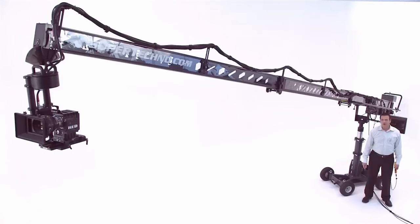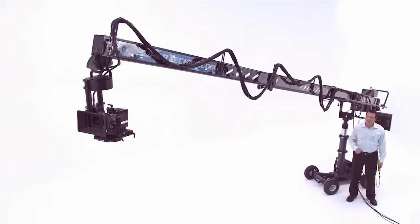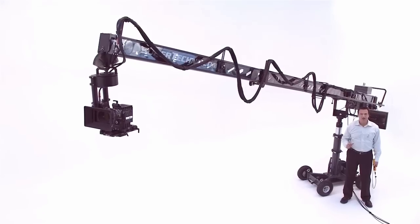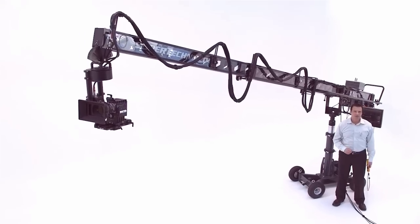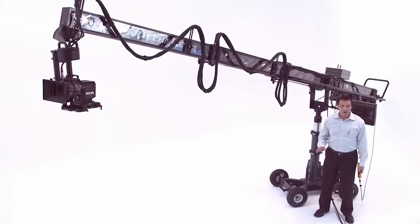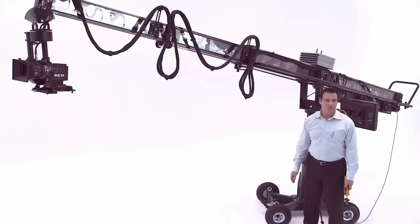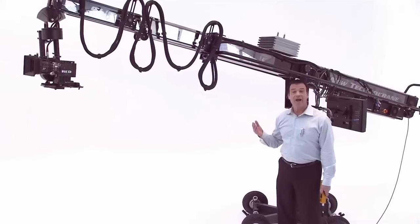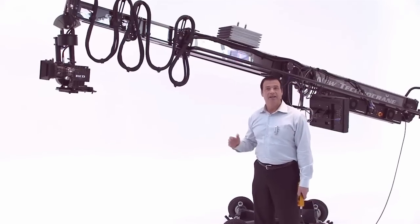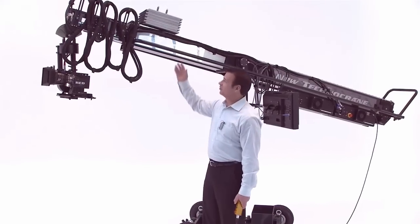At the heart of the new Technocrane is the telescopic arm. On its base, the crane lifts the camera up to 22 feet or 6.6 meters. The telescopic range is about 15.5 feet or 4.7 meters. Fully retracted, the arm is only 11.5 feet or 3.5 meters long.